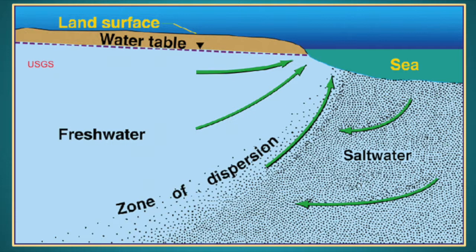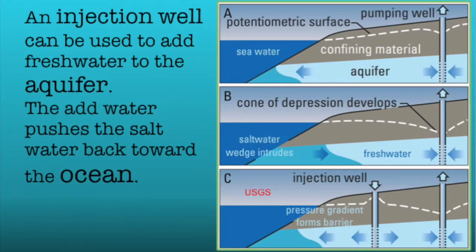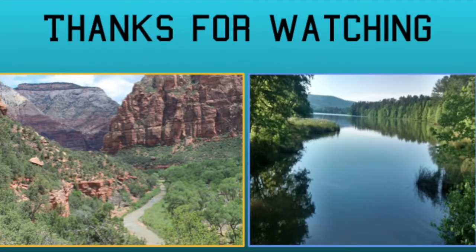Saltwater intrusion can happen in a coastal aquifer when pumping rates reduce the amount of fresh water flowing toward the ocean. When saltwater enters an aquifer, an injection well can be used to add fresh water. The added water pushes the saltwater back toward the ocean and keeps the pumping well from having this contamination. I'll make a separate video about wells and the effect on groundwater.